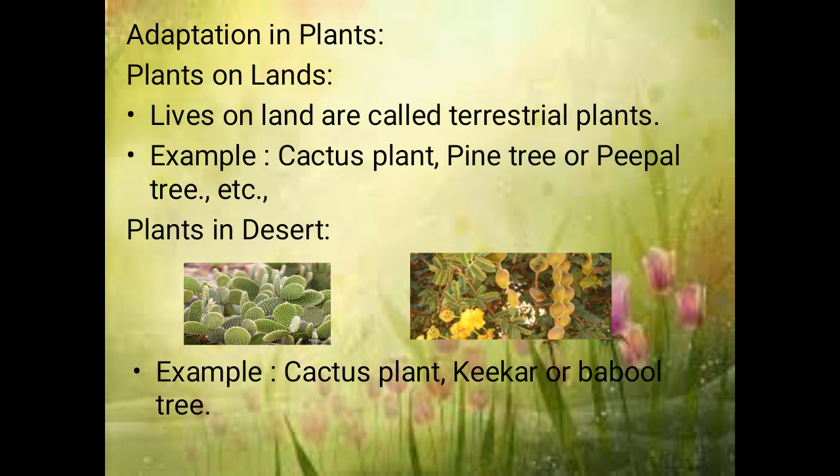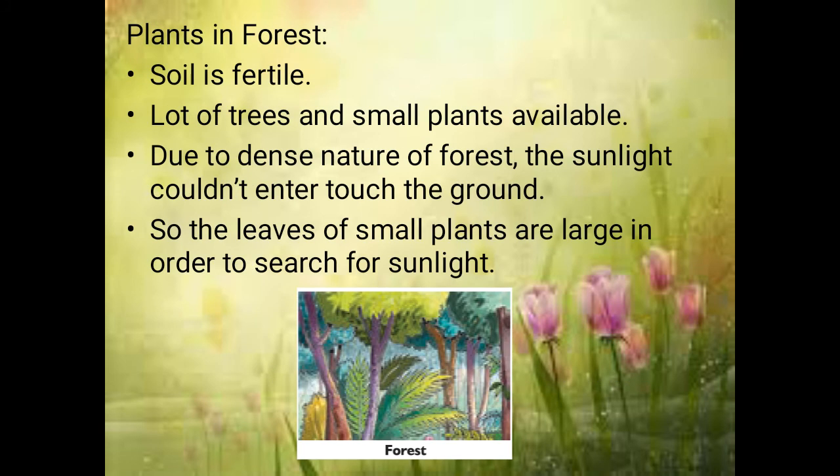So these are about animals. Now we are going to see about plants. The plants living on land are called terrestrial plants. Since the desert is very hot, loss of water will occur. In order to prevent that loss of water, the plants are designed in such a manner that they have thick leaves, so the plants cannot lose water easily. They also have deep roots in order to search for water. Examples of desert plants are the cactus plant and the baobab tree.